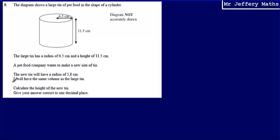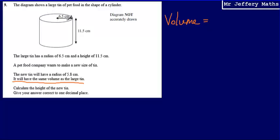To work through this, I first need to recognise that the volume of the current tin needs to be the same as the volume of the new tin. To find that volume, I need to know the volume formula for a cylinder. A cylinder is essentially a prism — you could think of it as a circular prism. So I'm going to use the formula for the volume of a prism: area of cross-section multiplied by the length, or the height in this case.